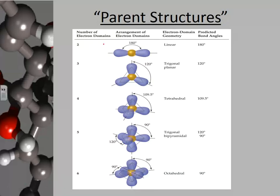Looking at our parent structures, this chart mentions electron domains, the arrangement of electron domains, electron domain geometry, and the predicted bond angle. Here's your central atom in yellow. Electron domains refer to the areas where electrons are occupied. The parent structures range from two electron domains up to six electron domains — two, three, four, five, and six. The trigonal bipyramidal and octahedral are expanded octets and are new to AP Chem. We're going to talk about how to think about the equatorial versus axial positions. I talked about in class the analogy of a ballerina with a tutu, which will help you visualize that.